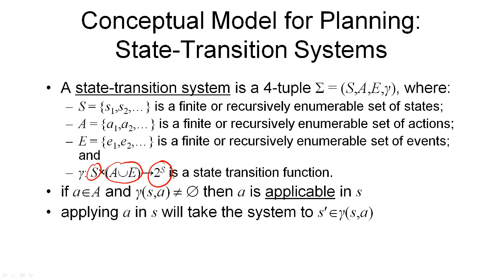We can now use this definition to define some other concepts formally. For example, applicability. We can say that an action A is applicable in a state S if gamma of S and A is not empty — so if there is at least one state that is the result of applying this action in the given state. And when we apply an action A in a state S, this will take our state transition system to a new state S prime, and S prime must be an element of gamma of S and A.